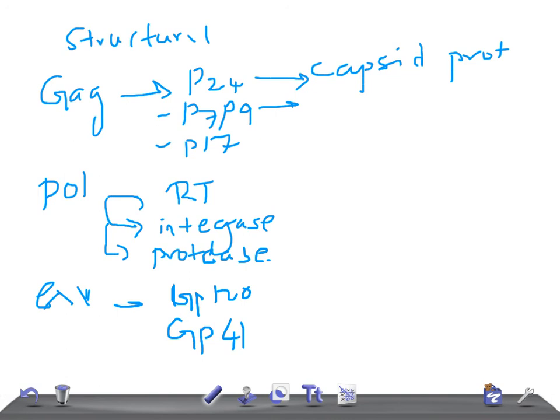P7 and P9 are core nucleocapsid proteins. P17 is a matrix protein.